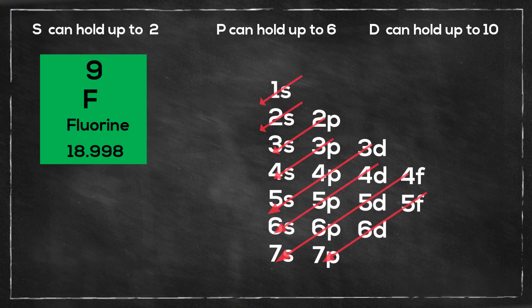So I will start at 1s. The s can hold up to 2 electrons, so it will be 1s2. Next I will move to 2s, and s can hold up to 2, so it will be 2s2. And now I have 5 left over because I have used 4, so I will move to the 2p and it will be 2p5. And if you write it using the noble gas, it looks like this.